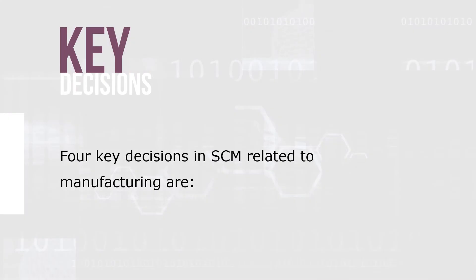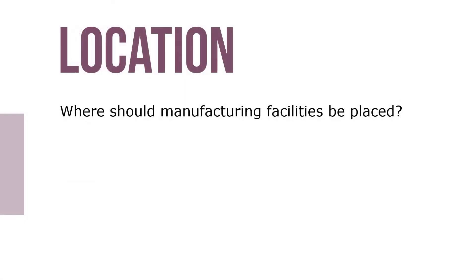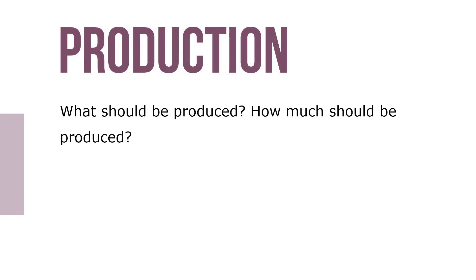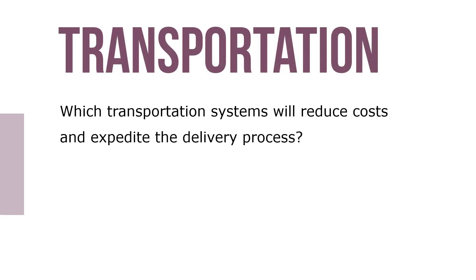Four key decisions in SCM related to manufacturing include: Location — where should the manufacturing facilities be placed? Inventory — when should an order be placed and how much should be ordered? Production — what should be produced and how much? Transportation — which transportation systems will reduce costs and expedite the delivery process?